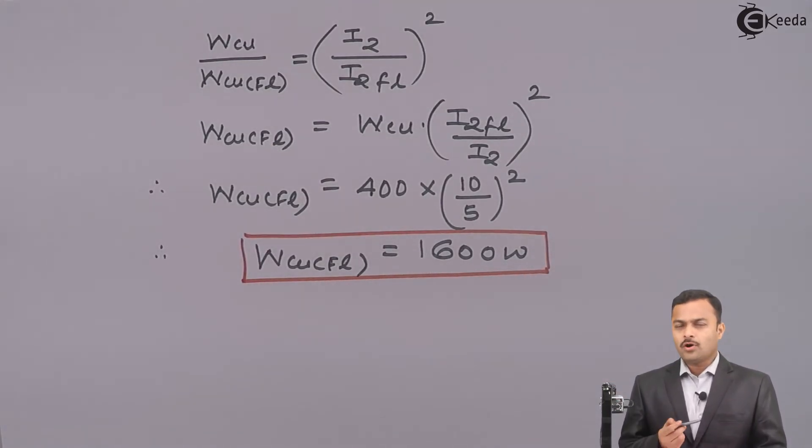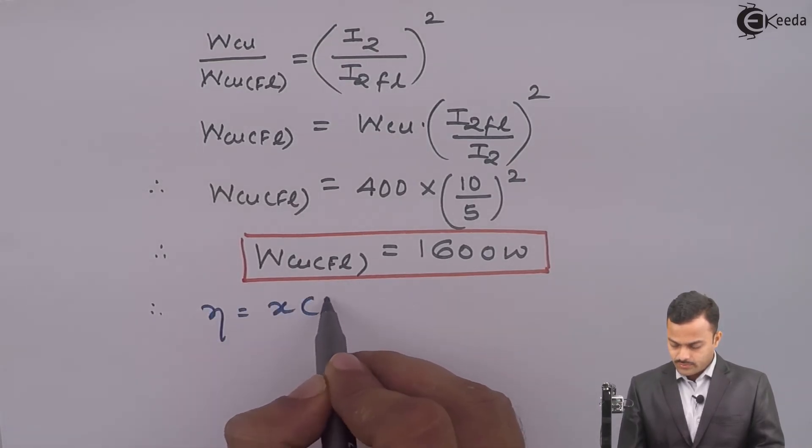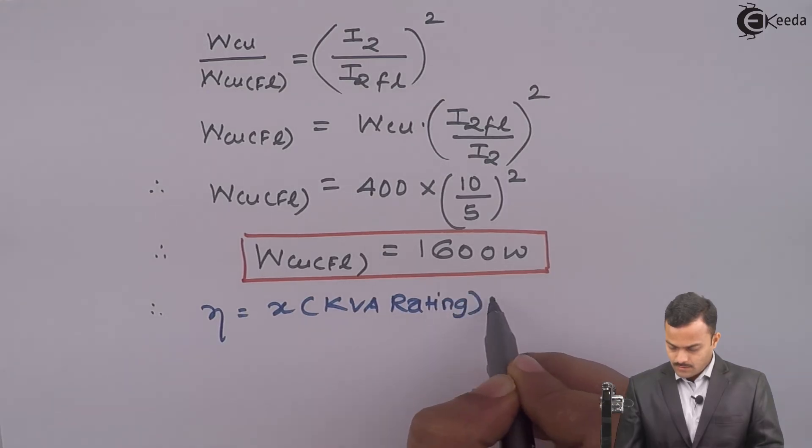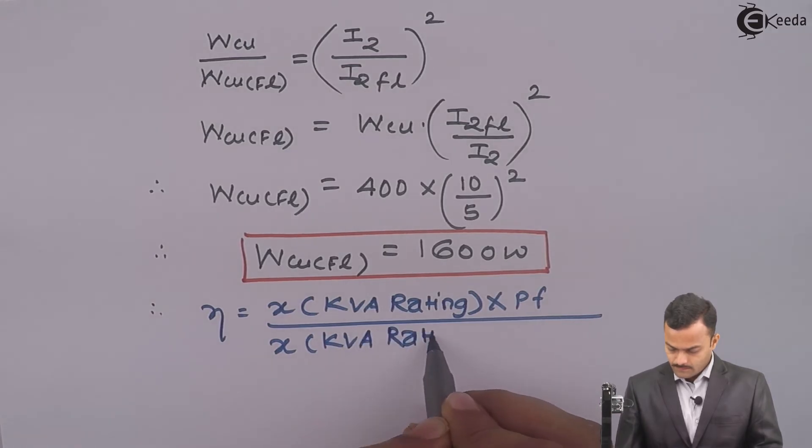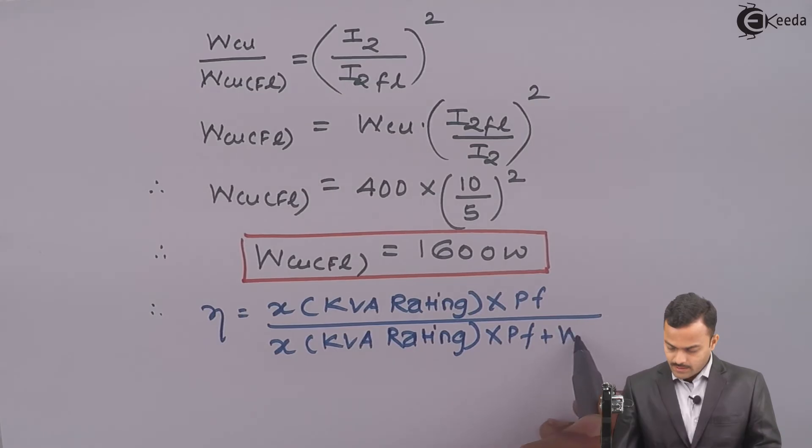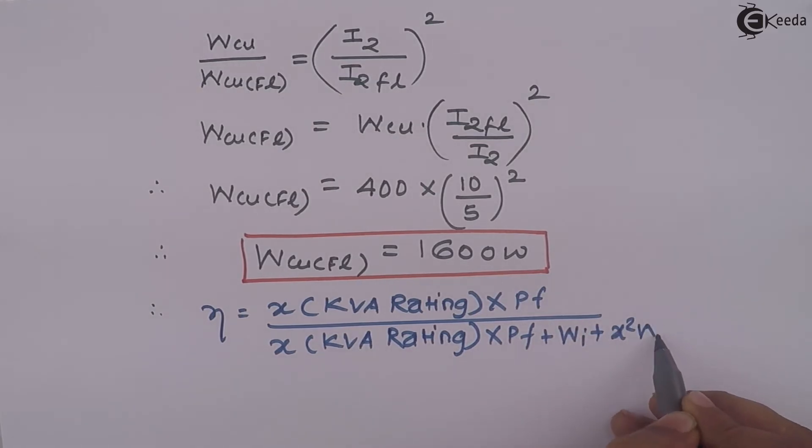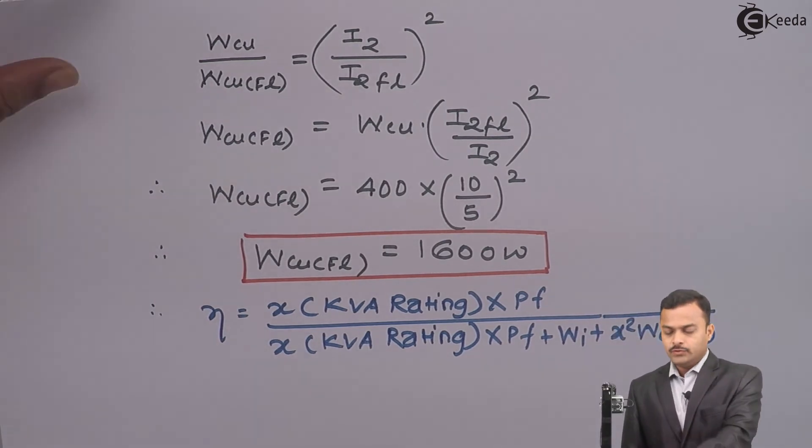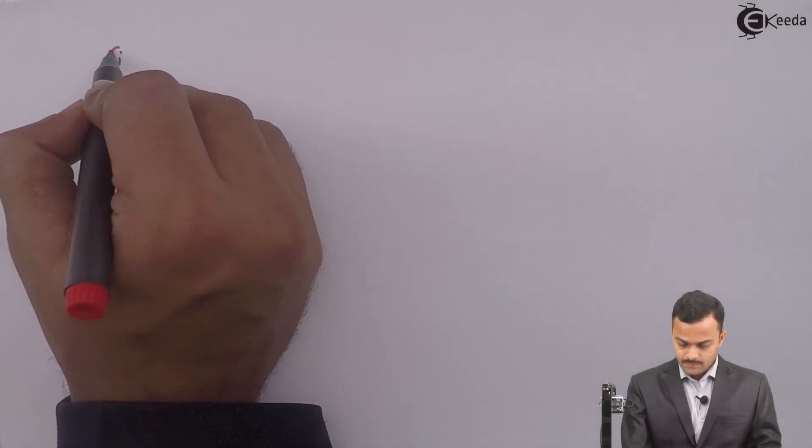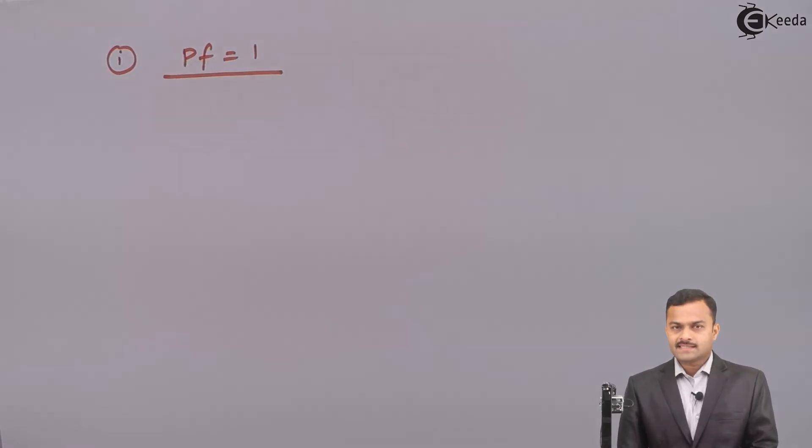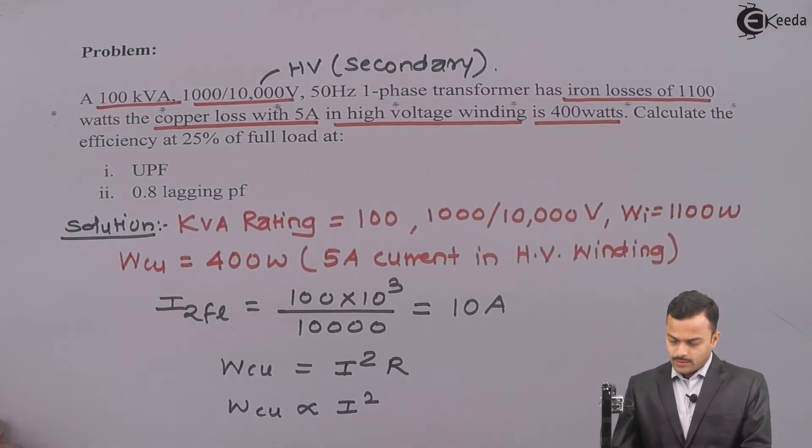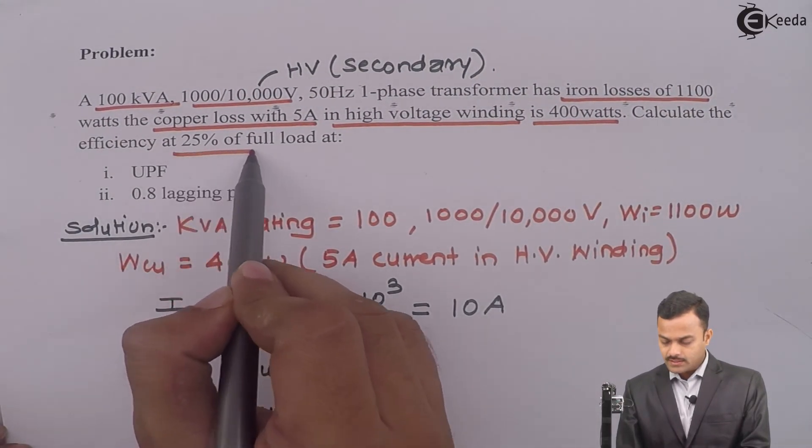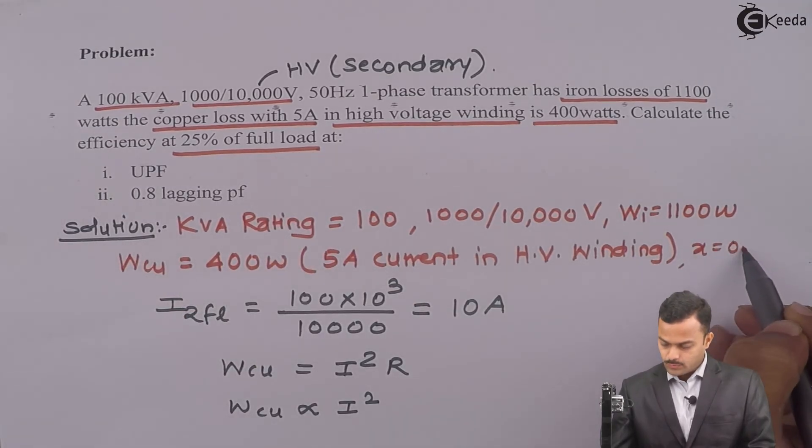Because now only one formula you have to use. And what is that formula? Efficiency is X into KVA rating multiplied by power factor divided by X into KVA rating multiplied by power factor plus iron loss plus X² into WCUFL. So in first case, power factor is 1 and X they have already given. What is the value of X they have given? They said calculate the efficiency at 25% full load. So X is 0.25.